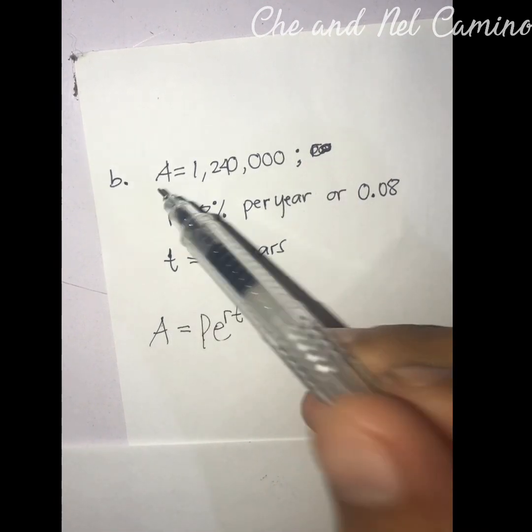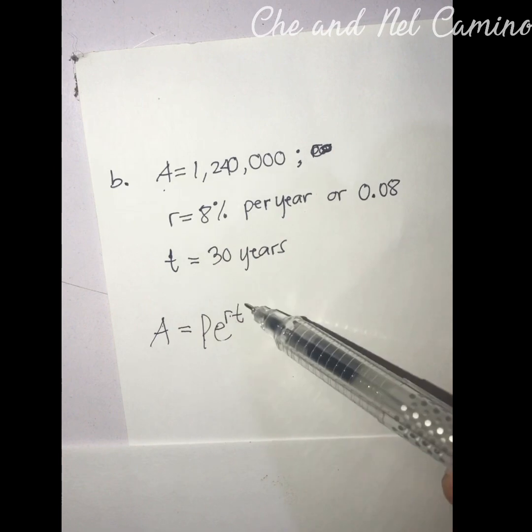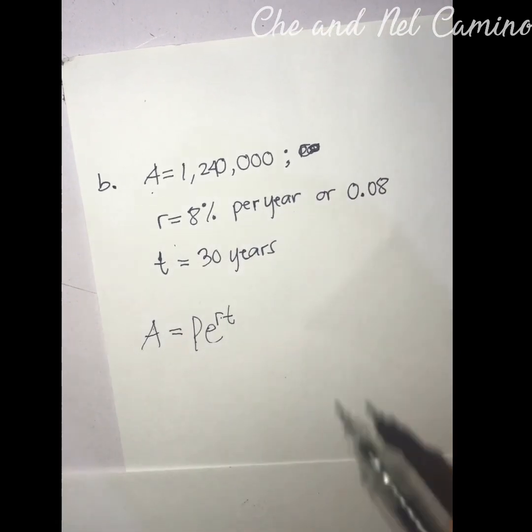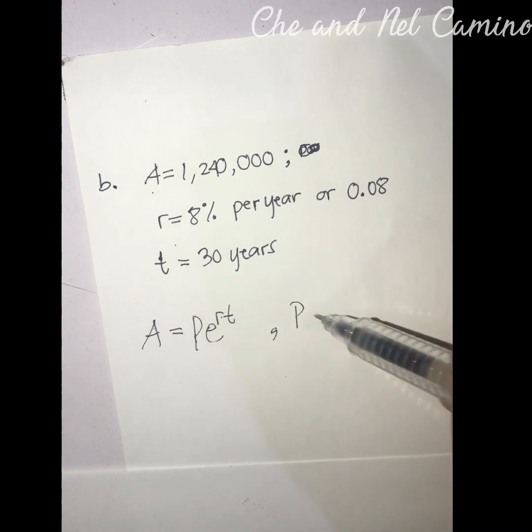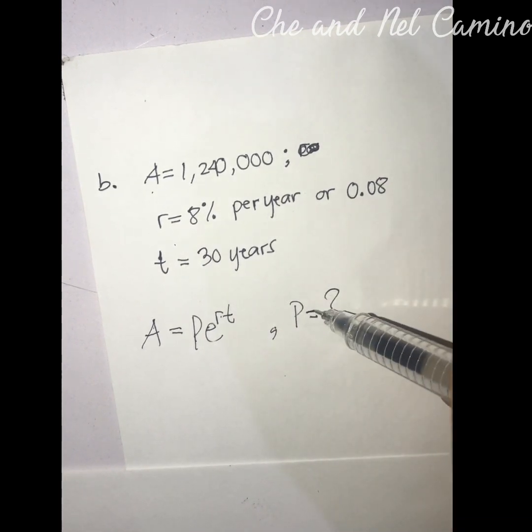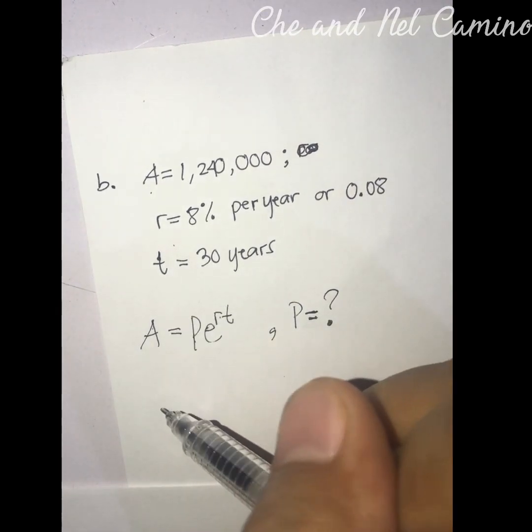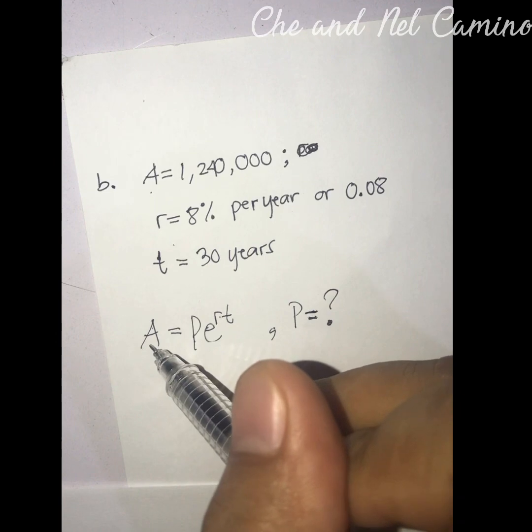So let's identify what is the unknown variable. It's quite obvious that A is given, r is given, t is given, so at this point obviously P is unknown. Let's look for the value of P.